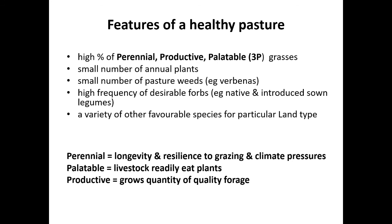A healthy pasture has a high proportion of perennial productive palatable species, commonly referred to as 3P grasses. It also has a small number of annuals and pasture weeds, a high frequency of desirable forbs — our native and introduced legume species — and a variety of other species for the particular land types. The key determinant of pasture condition and land condition is that high proportion of our desirable 3P pasture species. They're there for longer and are much more resilient to grazing and climate pressures, and they need to be palatable so livestock want to readily eat them and productive so animals can consume a high-quality forage diet.